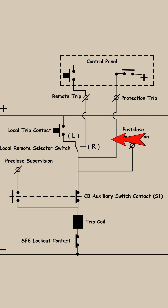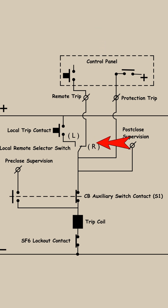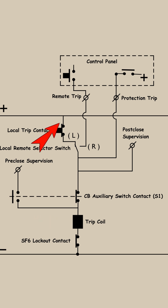This is the local/remote switch. Currently, the switch is set to remote, so you can operate the circuit breaker from the control room. If it is set to the local side, then by pressing this push button or rotating the associated tripping switch, the DC voltage — meaning local DC voltage — will come to the tripping coil following this path.